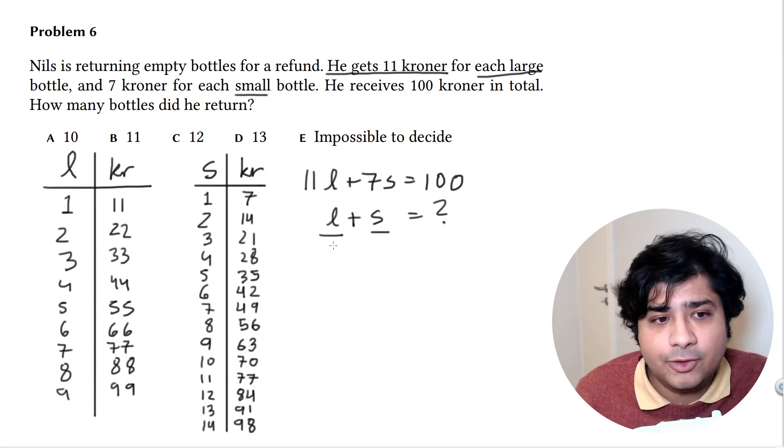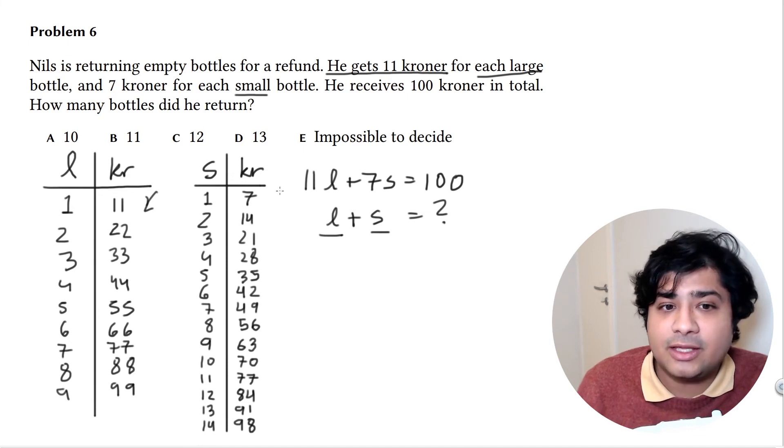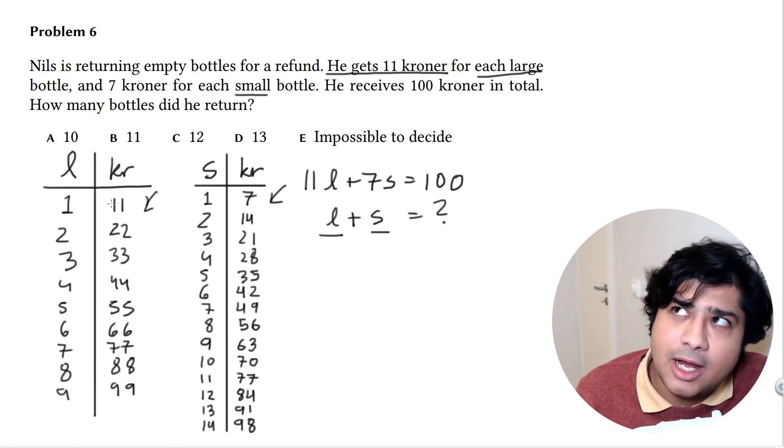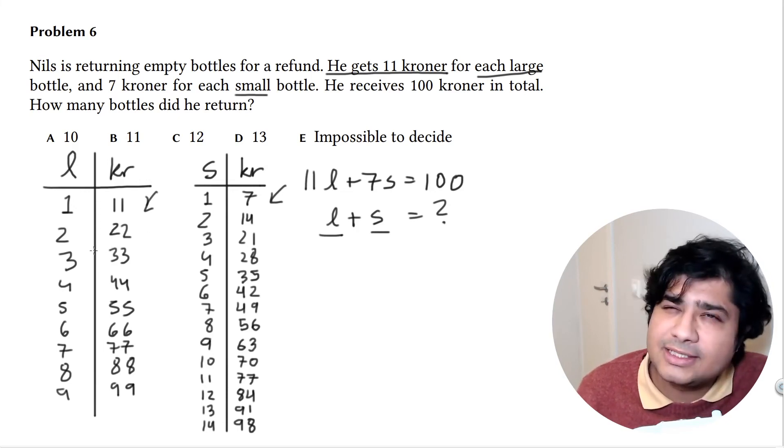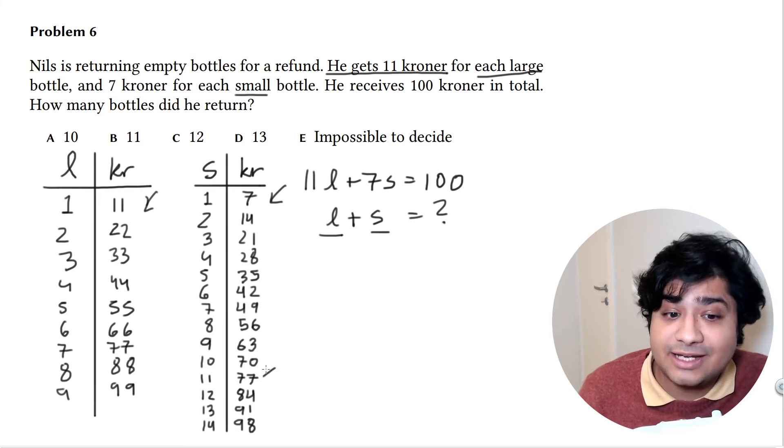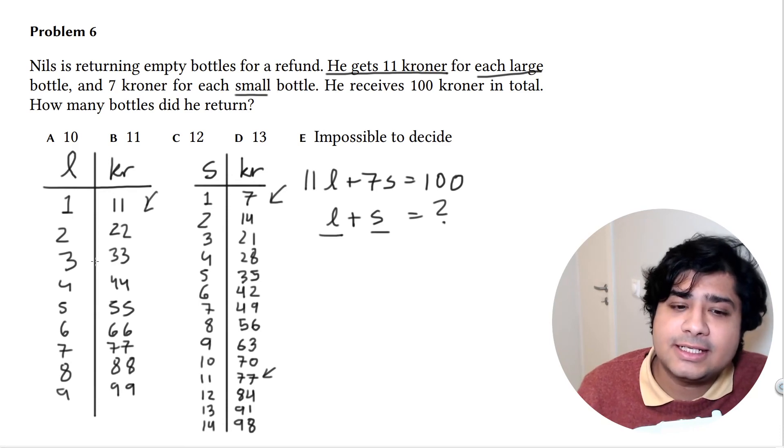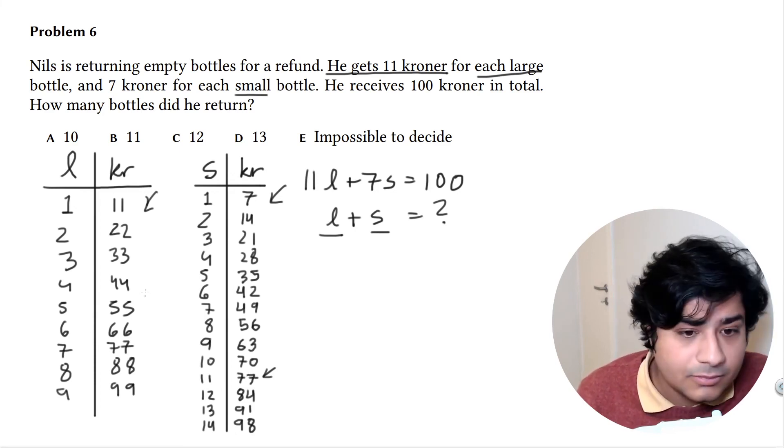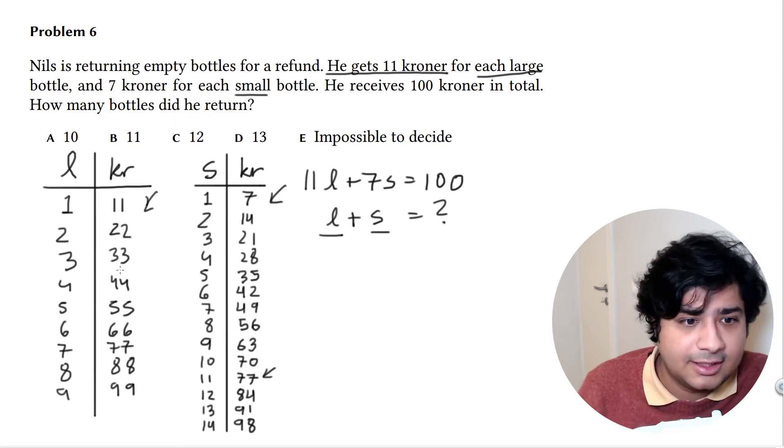Which L do we choose from these options that together with S equals 100? If it's 11, I'm looking for 89—nope, nothing. 22, I'm looking for 78—close, 77, not 78. 33, looking for 67—closest we have is 63. 44, looking for 56—hey, we got a 56! That one works.